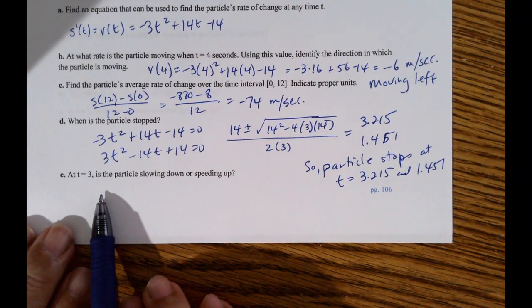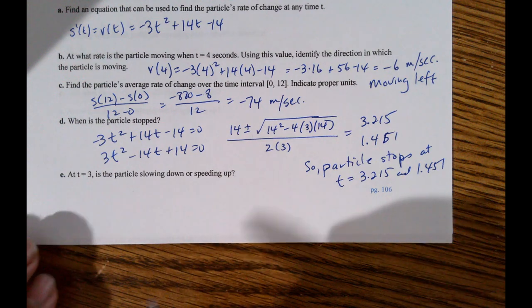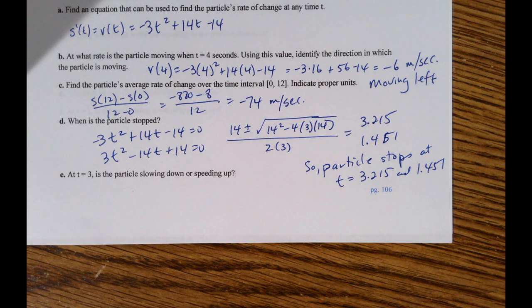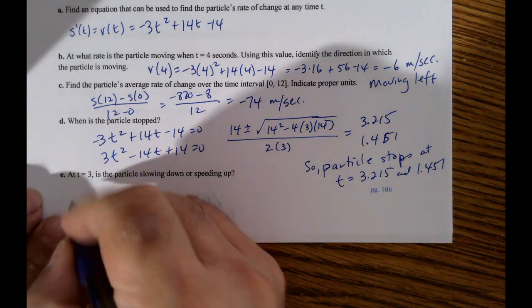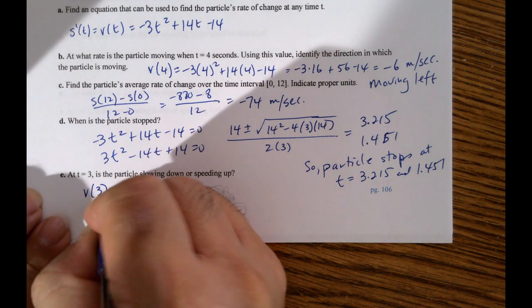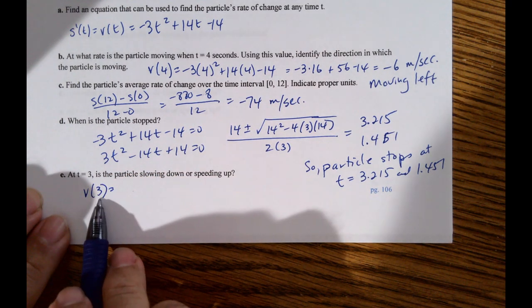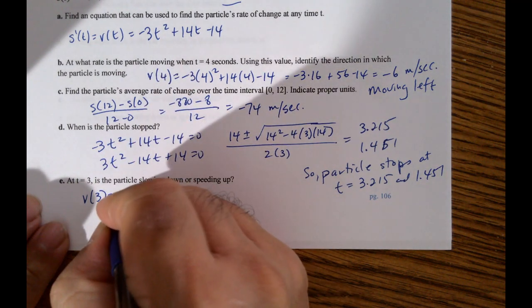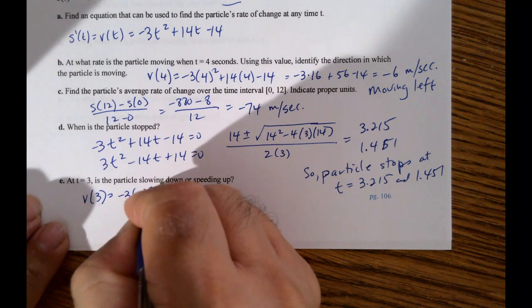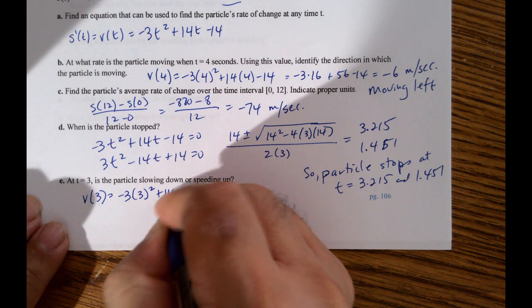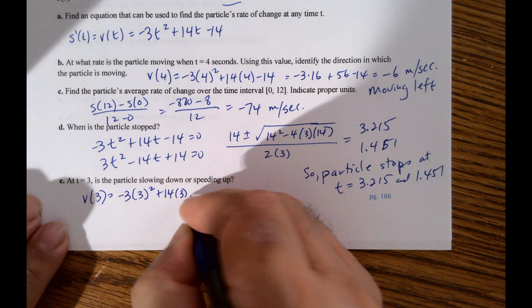At t equals 3, is the particle slowing down or speeding up? So we need acceleration to answer that question. But let's go ahead and put in our velocity first. V of 3. You just plug in 3 into that expression. So it's negative 3 times 3 squared plus 14 times 3 minus 14.